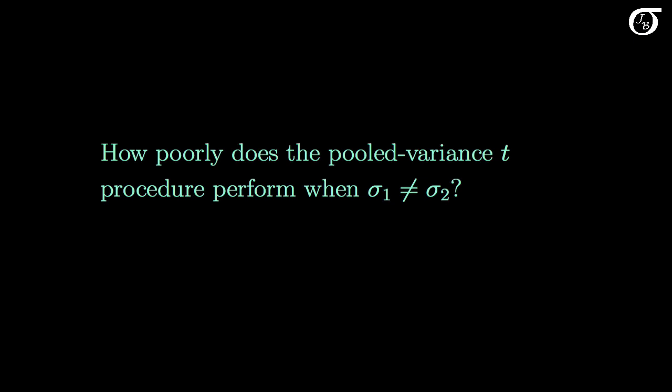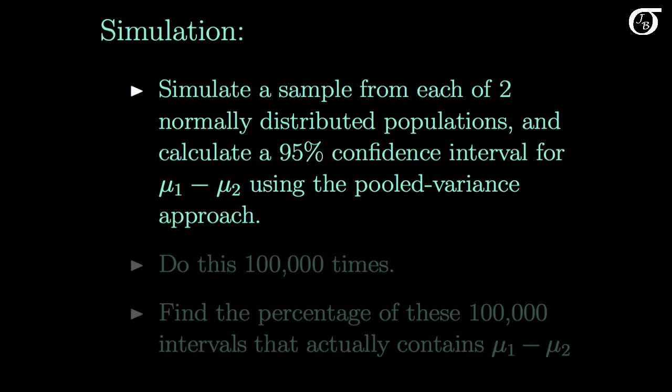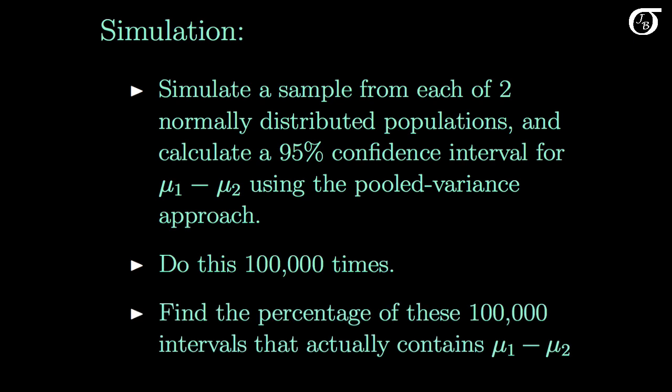In order to understand the differences in performance between the pooled and unpooled variance t procedures, we're going to look at a couple of questions. First, how poorly does the pooled variance t procedure perform when the population standard deviations are different? We're going to investigate this using simulation — simulating a sample from each of two normally distributed populations, calculating a 95% confidence interval for mu1 minus mu2 using the pooled variance t approach, doing this 100,000 times, and finding the percentage of those intervals that actually contains mu1 minus mu2.